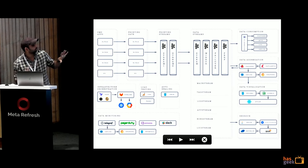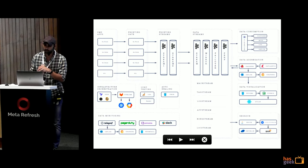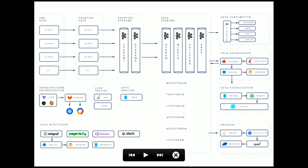This is how the entire data engineering landscape looks at Gojek. We have different OMS apps which produce data from different streams. That goes to a fronting architecture, then to main streams which are a lot of Kafka clusters. Then we have consumers who consume this data. On one side we have aggregation where all this raw data gets aggregated, and there are teams which consume that as well. Then we have data visualization, warehousing, infrastructure orchestration, monitoring, load testing, and auto-healing components.